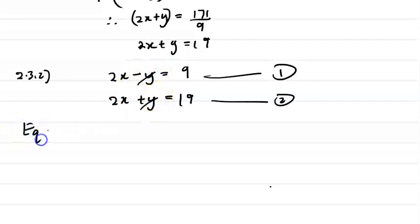So I'll say equation 2 plus equation 1. 2x plus 2x will be 4x, minus y and plus y is equal to 0. That cancels off. 9 plus 19 is 28. Therefore, x is going to be 28 divided by 4, which is going to equal to 7.